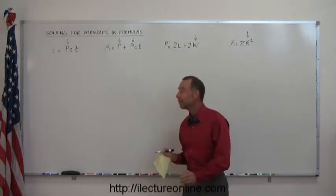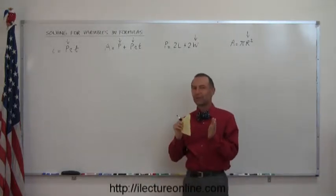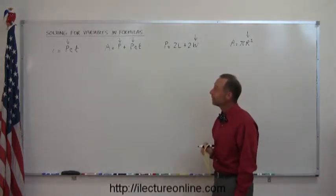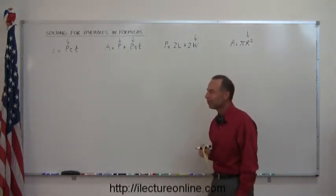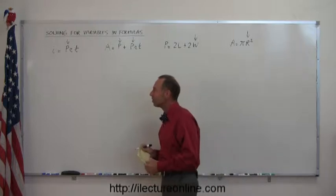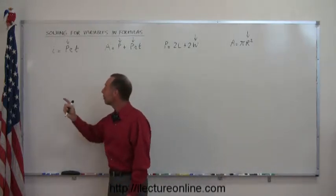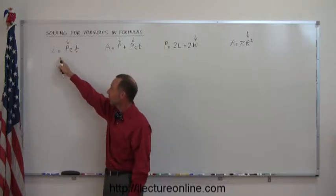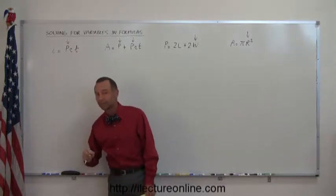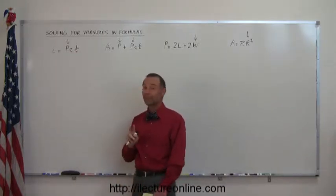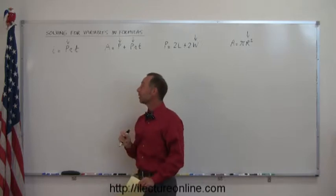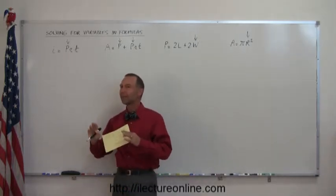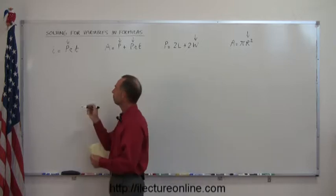It turns out that if we follow a very strict procedure, it becomes really easy. So let's see what those strict procedures are. The first thing you do is look at where the variable is. In this case, the variable is on the right side of the equals sign instead of the left side. What we can do is simply turn the equation around — write this on the left side, this on the right side, and don't do anything else. Simply turn it around.